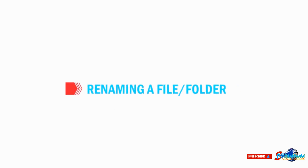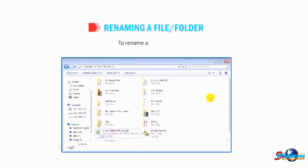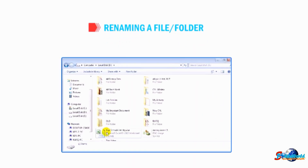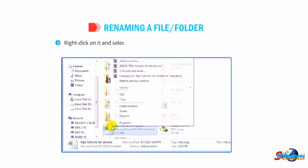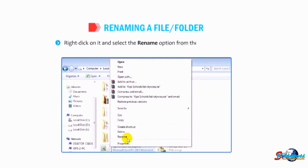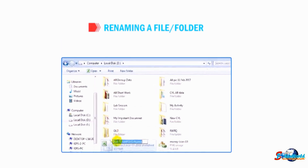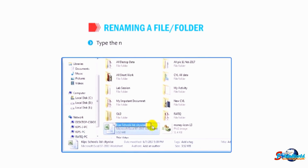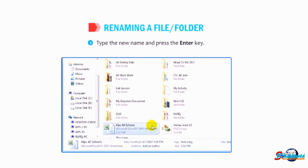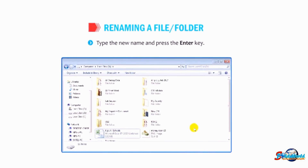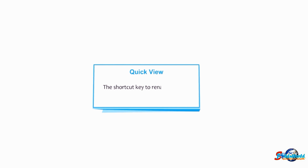Let us find out how to rename a file or folder. Right-click on it and select the Rename option from the shortcut menu. Type the new name and press the Enter key. The shortcut key to rename a file or folder is F2.